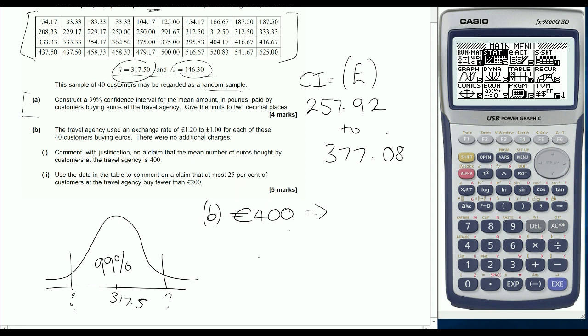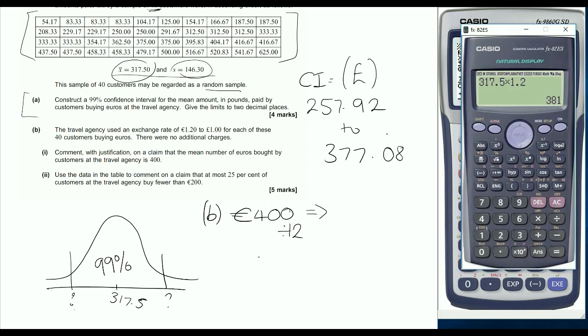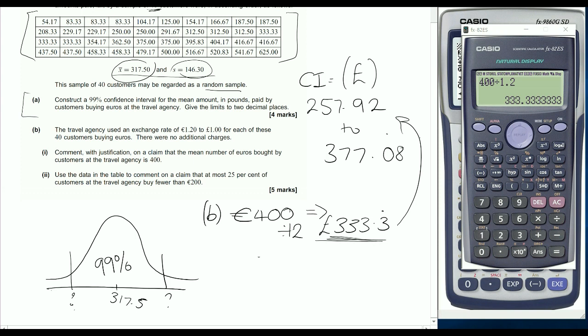If we convert our 400 euro mean into pounds, we're dividing by 1.2. So if we do 400 divided by 1.2, we get 333.3 recurring. So that's now in pounds. What we're asked to think about is, is this in the confidence interval?